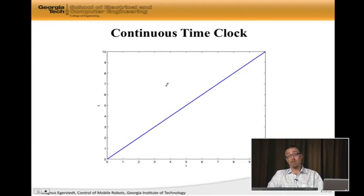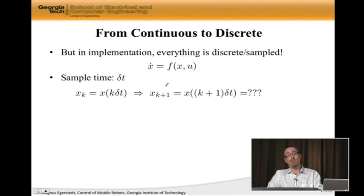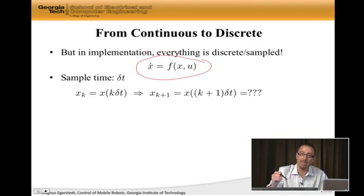And the next couple of lectures, we're going to start developing models of particular systems. But before we do this, I want to say a few words about how to go from continuous time to discrete time. Because our models are going to be continuous time differential equations. But then when we're putting this on a robot, we're going to put it on a computer, the computer runs in discrete time. So somehow we need to map continuous time models onto discrete time models.